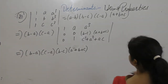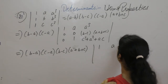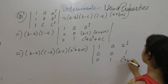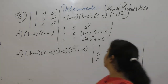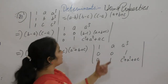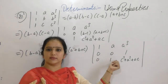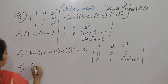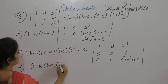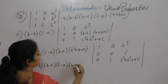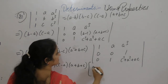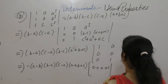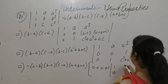So put this value. With (B minus A)(C minus A) outside, the matrix becomes: row 1 is 1, A, A cubed; row 2 is 0, 0, 1; row 3 is 0, 1, C squared plus A squared plus AC. Now take this term common. We get (B minus A)(C minus A)(B minus C)(A plus B plus C). Now expand along row 2 since it has the maximum number of zeros.